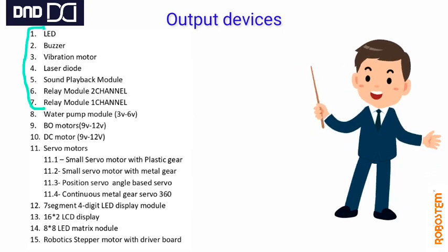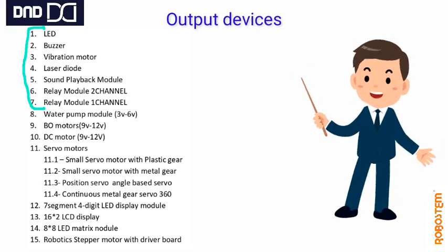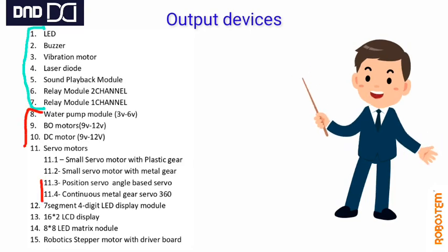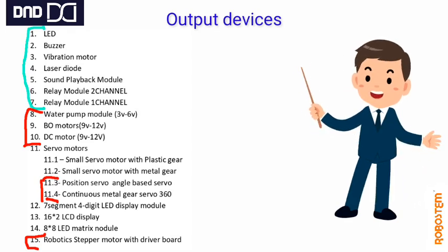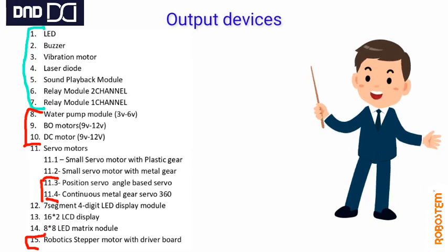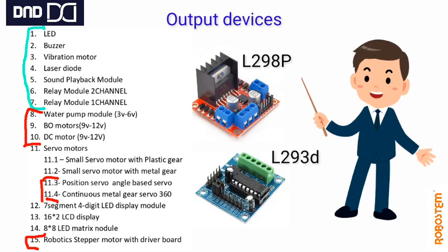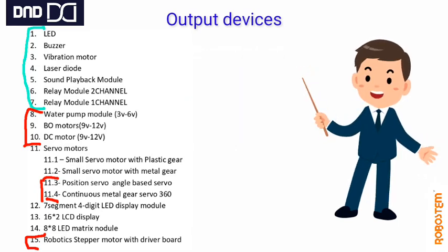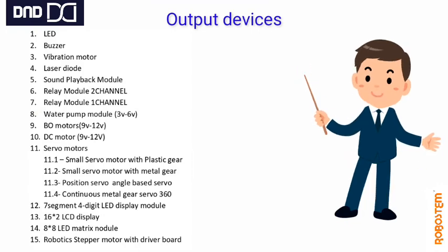Output devices 1 to 7 — LEDs, buzzers, vibration motor, laser — are very easy to use. These are all two-pin devices: connect ground and positive to any digital output pin of the microcontroller to easily turn them on and off. Devices 8 through 11 and 15 require a different external power source as well as a driver board. The L298P and L293D are types of driver boards needed to interface between the microcontroller's 5V and the motor's required 9 to 12 volts. Small servo motors (11.1, 11.2) are very easy to use with Arduino Mega.